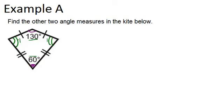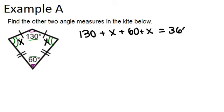So let's call the angle that we don't know x. And that means this angle will also be x. So now what we know is that 130 plus x plus 60 plus x must equal 360 degrees.